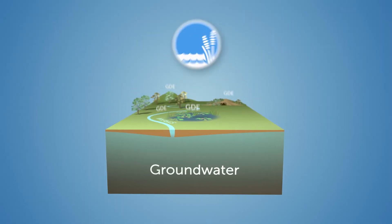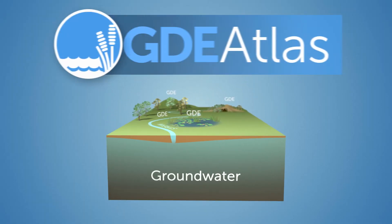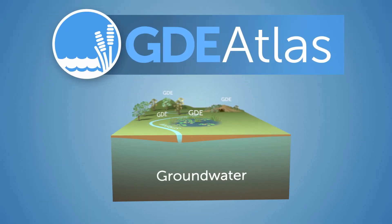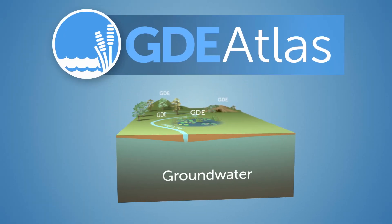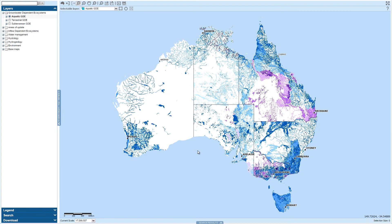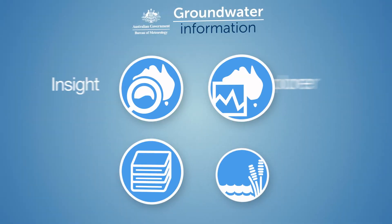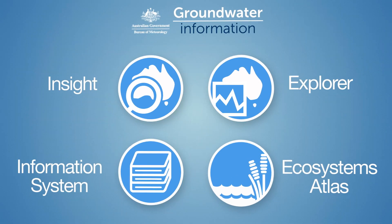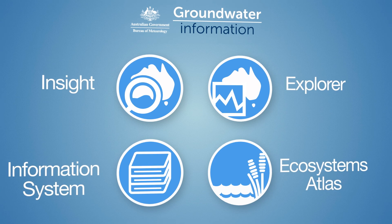The Groundwater Dependent Ecosystems Atlas, or GDE Atlas, has been developed to meet these information needs. The Atlas is a national inventory of groundwater-dependent ecosystems across Australia. It maps the location of these ecosystems and provides information about their ecology and hydrogeology. It is part of the Bureau's online Groundwater Information Suite.